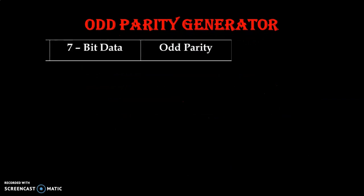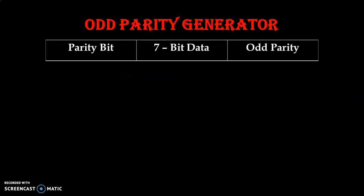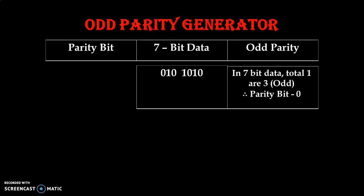Let us take one example. We have 7-bit data and odd parity. Suppose we take the number 0101010. This is 7-bit data and we have to add one parity bit. If we analyze this 7-bit data, we can see that the total number of 1s are 3, which is already odd. So the parity bit will be 0, because it is already odd and this is an odd parity generator.